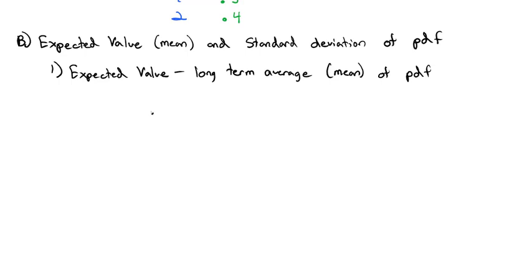And the formula for the expected value, or the mean, is equal to the sum of all the X's times their individual probabilities. This is a good formula to know.